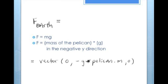This force can be shown as negative mg. We need to write this in vector form because the initial velocity of the pelican was written in vector form. The x and z components are both zero, and the y component is negative g times pelican dot m, where pelican dot m is the variable for the mass of the pelican.